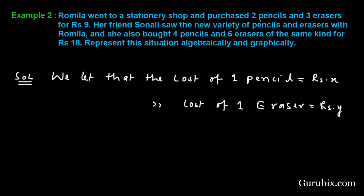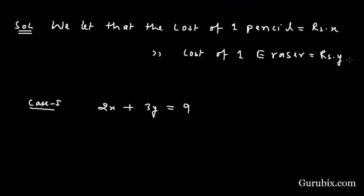For the first condition, Romila purchased two pencils and three erasers for rupees nine. The algebraic representation of this condition will be: two pencils means 2X, three erasers means 3Y, equals nine. We multiply the number of pencils by the cost of one pencil to get the cost of two pencils, and similarly for erasers. Adding both gives rupees nine, so we write: 2X + 3Y = 9.